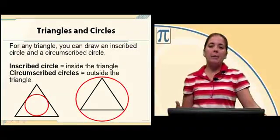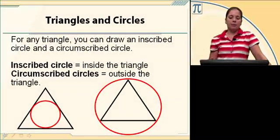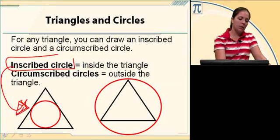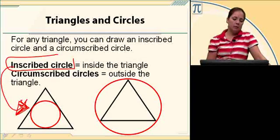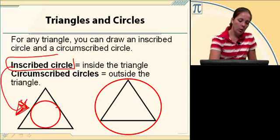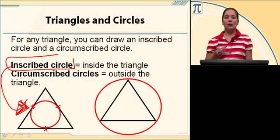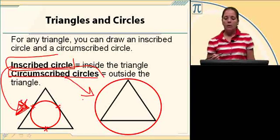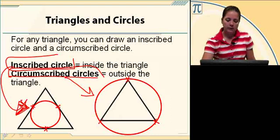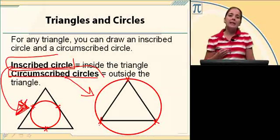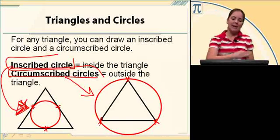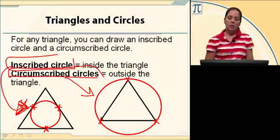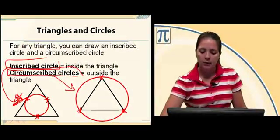For any triangle, you can draw an inscribed circle and a circumscribed circle. An inscribed circle means it's inside the triangle — all three sides are tangent to that circle, or they touch the circle one time. Circumscribed circles are on the outside of the triangle, and each vertex is on the circle. So the inscribed circle is inside the triangle touching each side once, while the circumscribed circle goes on the outside with each vertex as a point on the circle.